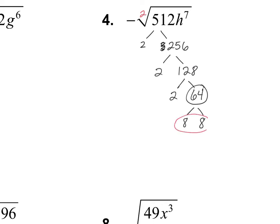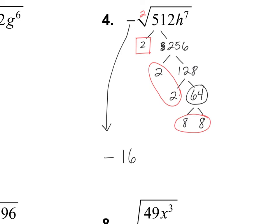So I have a group of two 8s. I have a group of two 2s. And notice that the remaining 2 doesn't have a partner, so it's going to stay inside the root. There's a negative sitting out front, so that's going to be part of our answer. Outside, we're going to have one of these 2s and one of these 8s, and we multiply them back together, so that gives us 16. And inside the root, I have a 2.